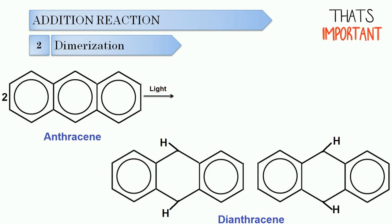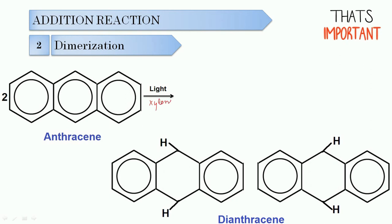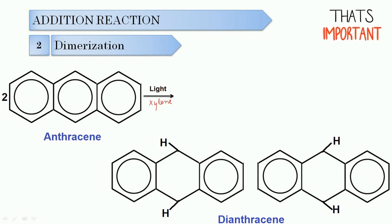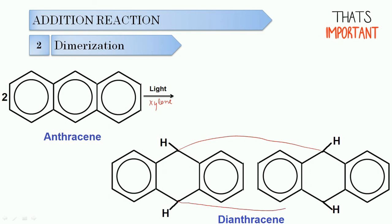The next reaction is dimerization. In this case, two molecules of anthracene dissolved in xylene, in the presence of UV light, undergo dimerization to form 9,10-dianthracene. The dimerization occurs at position number 9 and position number 10, and 9,10-dianthracene is formed.